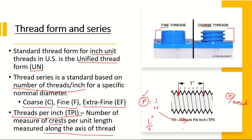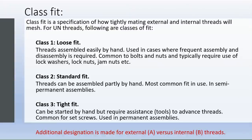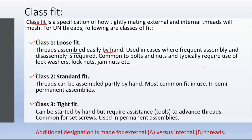Before that, let's take a look at what kinds of fits we have when using fasteners. A class fit is a specification of how tightly the external and internal threads are mated when meshed. For UN threads, there are three classes of fits: loose fit, standard fit, and tight fit. Loose fit threads are assembled very easily by hand and are used where frequent assembly and disassembly is needed. They require the use of lock washers, lock nuts, or jam nuts to assure sufficient strength in the assembly.